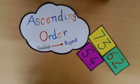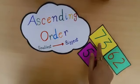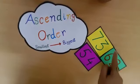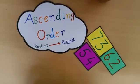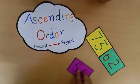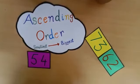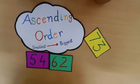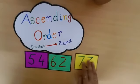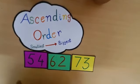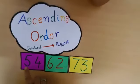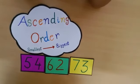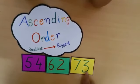Let's see another example. We have three numbers: 73, 62, and 54. We have to arrange these numbers in ascending order. First we will take the smallest number, that is 54. Next we will take the number 62. Next we will take the number 73. We have arranged these numbers in ascending order, from smallest number to the biggest number.